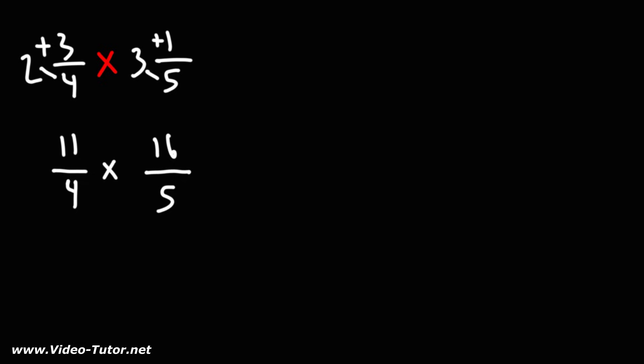So now we can multiply across. But before we do that, let's see if we could cancel. 16 is 4 times 4. So notice that 4 is basically 4 times 1. Notice that we could cancel a 4.